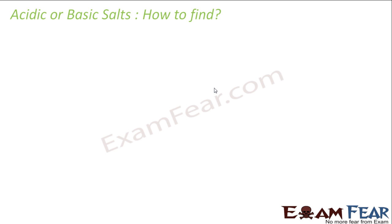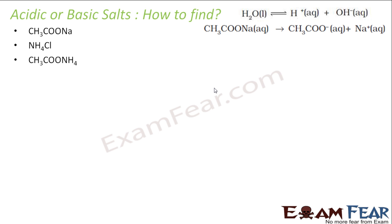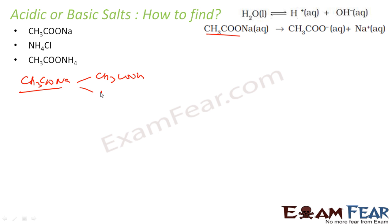Salts come from combinations of weak acid–strong base, strong acid–weak base, or weak acid–weak base. Let's take CH3COONa as an example. By looking at this salt, you can identify it was formed from CH3COOH and NaOH. CH3COOH is a very weak acid and NaOH is a very strong base — so this is a salt of weak acid and strong base.